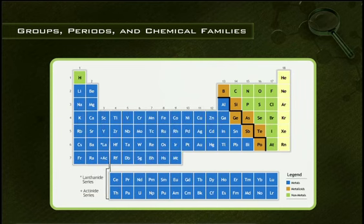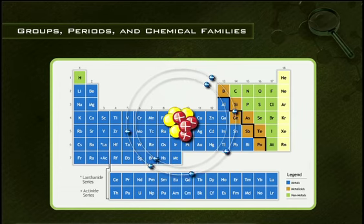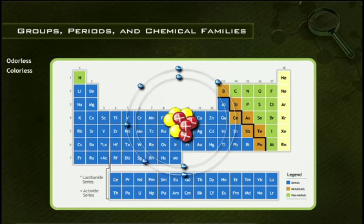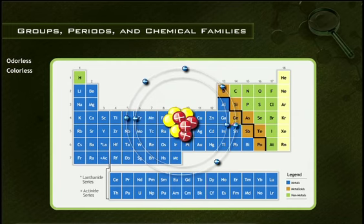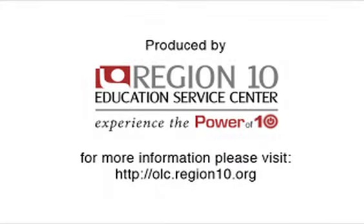Group 18 is the noble gases family. Unlike halogens, all the noble gases have similar properties. They are all monatomic gases at room temperature and under standard conditions. They are odorless and colorless, and do not have a tendency to react with other elements, since their outer shells have a complete set of eight valence electrons. The noble gases also have the highest ionization energies on the periodic table.